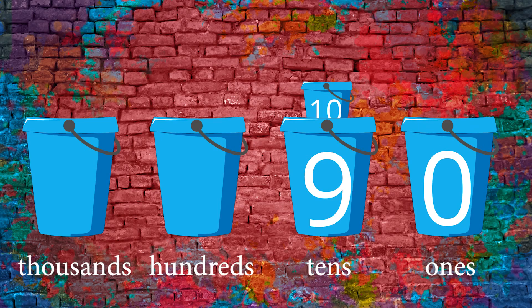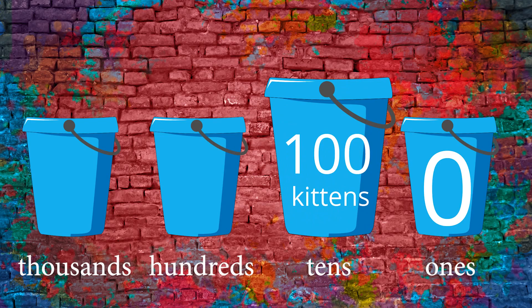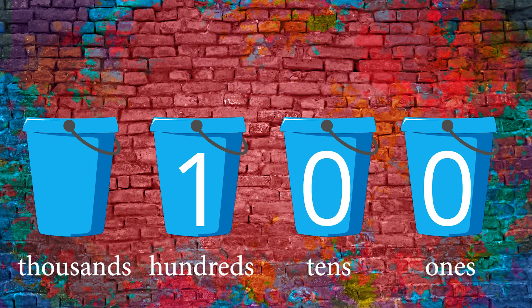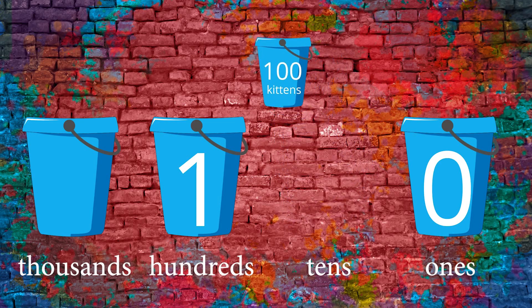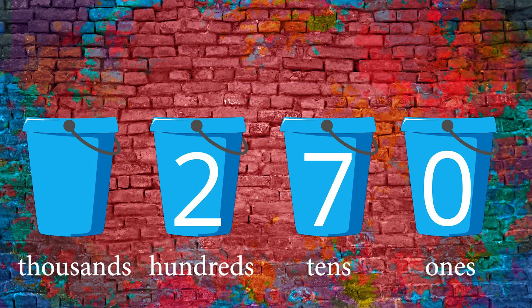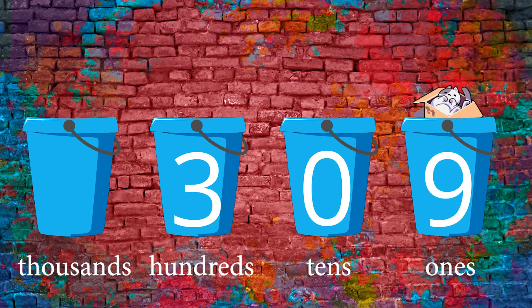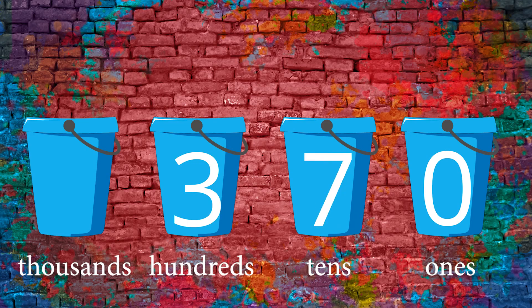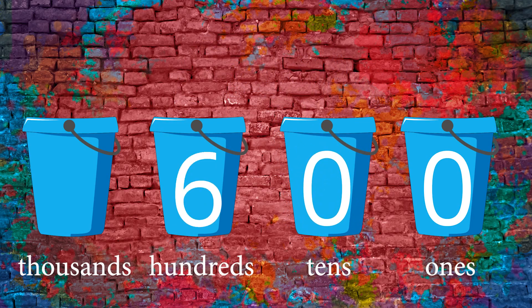Can you guess what we do now? Yep — we have ten groups with ten kittens each, which means we have a big group of 100 kittens in our tens bucket, so now we'll put our group of 100 kittens into the hundreds bucket. Just like the tens bucket counted how many groups of ten we had, the hundreds bucket counts how many groups of hundreds we have. And this pattern of filling up the ones bucket, filling up the tens bucket, filling up the hundreds bucket, and eventually filling up the thousands bucket, can continue on forever.